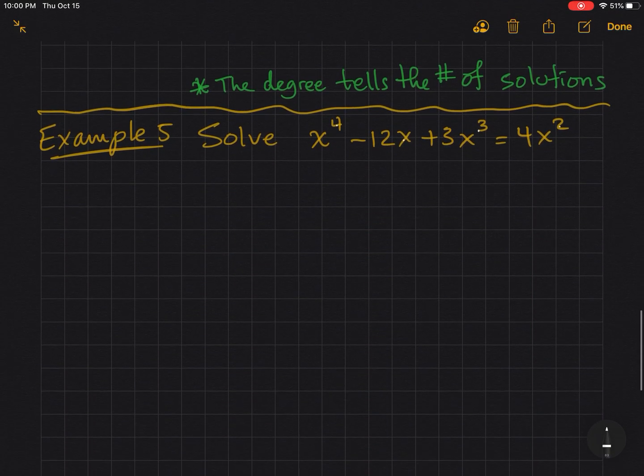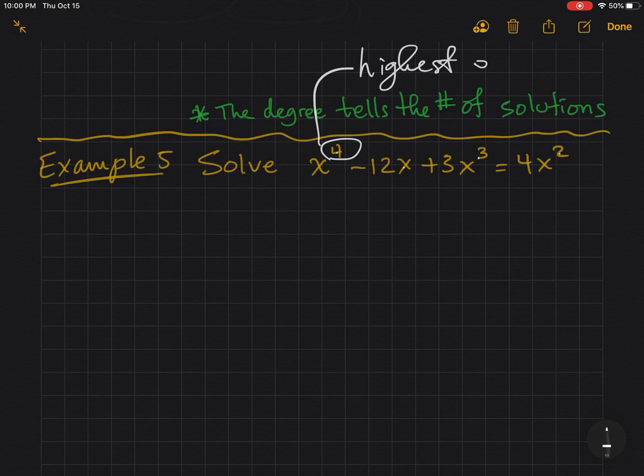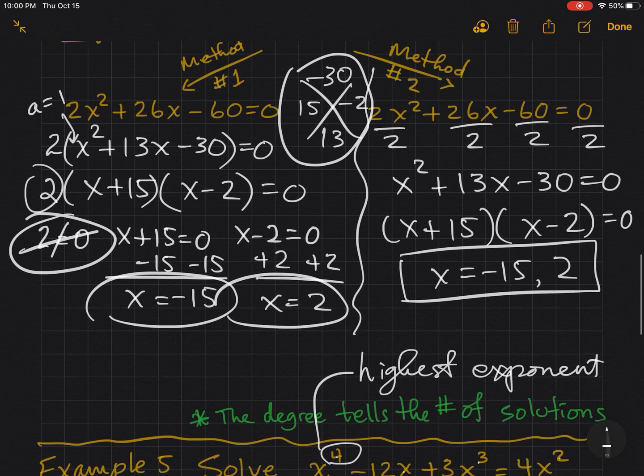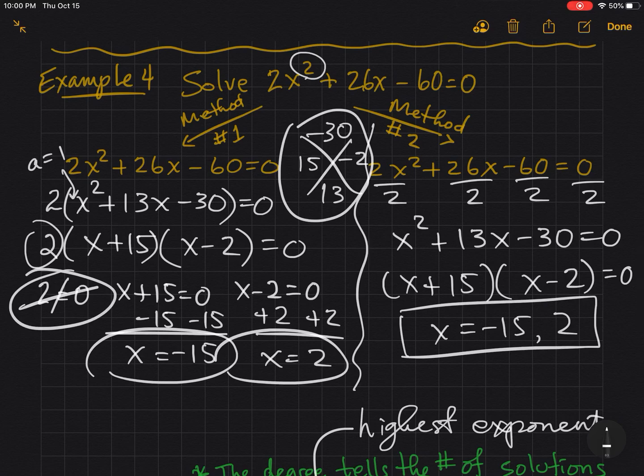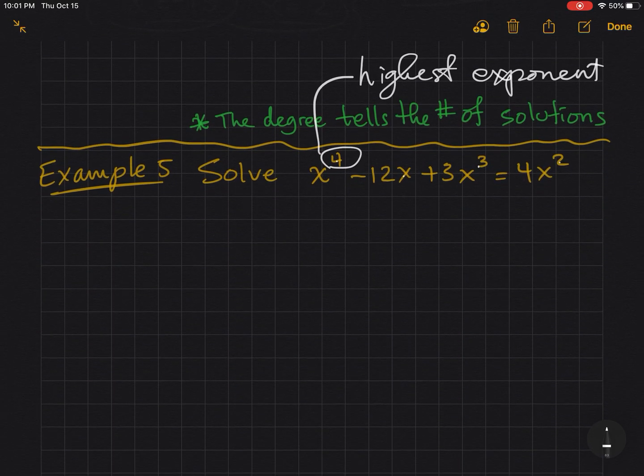Example last. Notice in green, this is very important. The degree tells the number of solutions. Remember, the highest exponent is the degree. The highest exponent, that's our degree. That tells you how many solutions. Notice, in example 4, the degree was 2, and we had two solutions. And you'll notice that that holds true. Sometimes you have duplicate solutions, and we'll talk about multiplicity a little bit later.